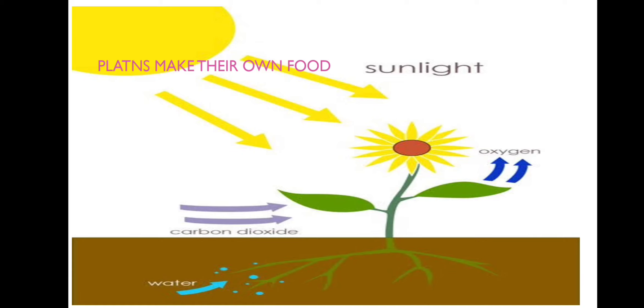They get water from the soil. Their roots absorb the water from the soil. And plant take oxygen from the air and sunlight from the sun. And by mixing all the three contents, plants make their own food.